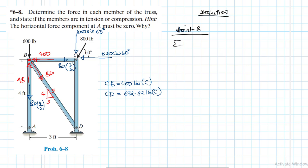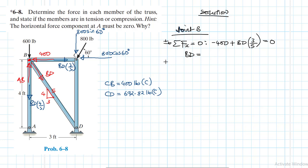Summation of forces in the x-direction at joint B equals zero: minus 400 plus BD × (3/5) = 0. Therefore BD = 400 ÷ (3/5) = 666.67 pounds, and this member is in tension.